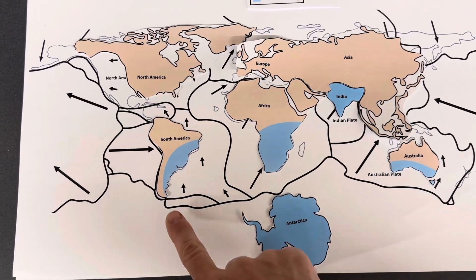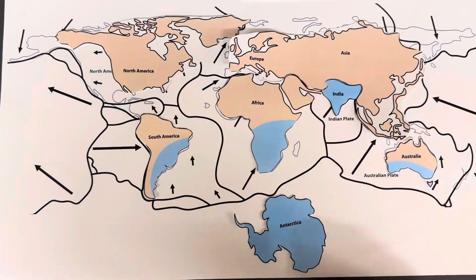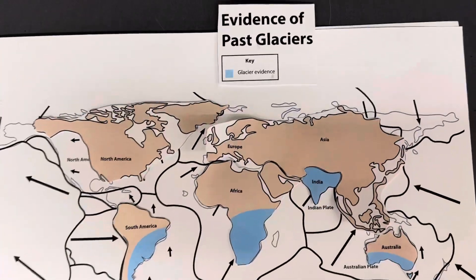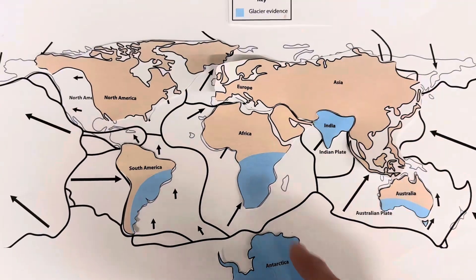The arrows show the direction that they've been moving. We're going backwards and we want to try to match up our evidence. In this case, I have evidence of past glaciers.